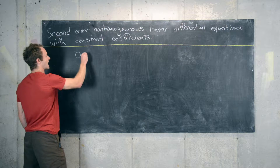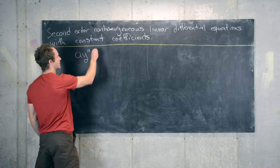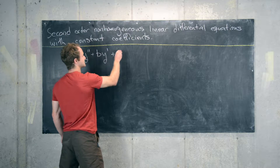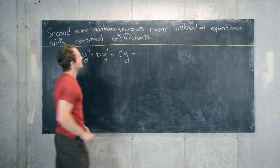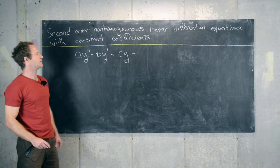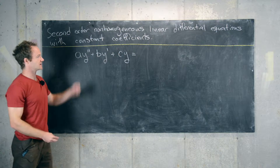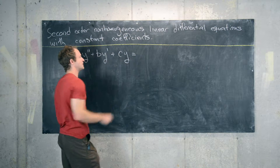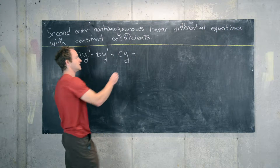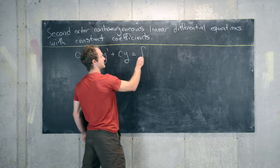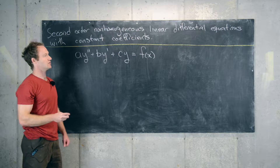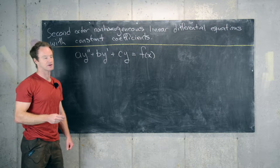We have a y double prime plus b y prime plus c y. This would be second-order with constant coefficients and linear. If this were equal to zero, it would be a homogeneous differential equation, but we want to set this equal to some function f of x, and so this would be a non-homogeneous differential equation.